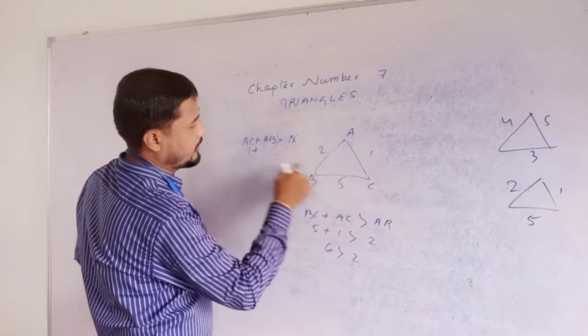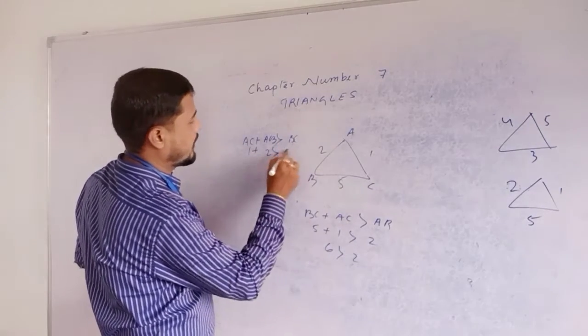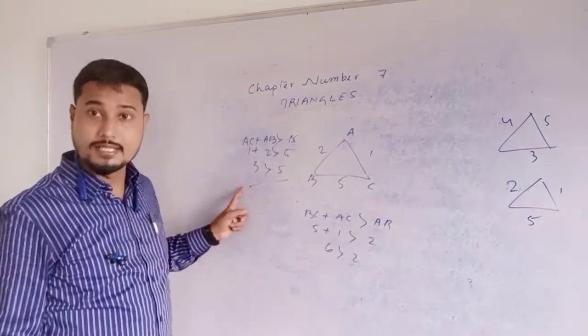What is the value of BC? 5. 3 greater than 5. Correct. Incorrect. Incorrect.